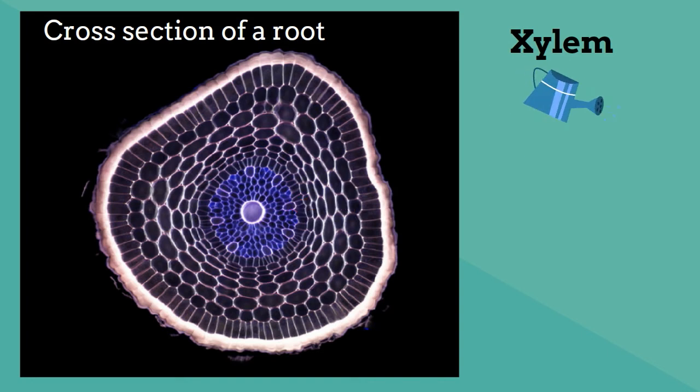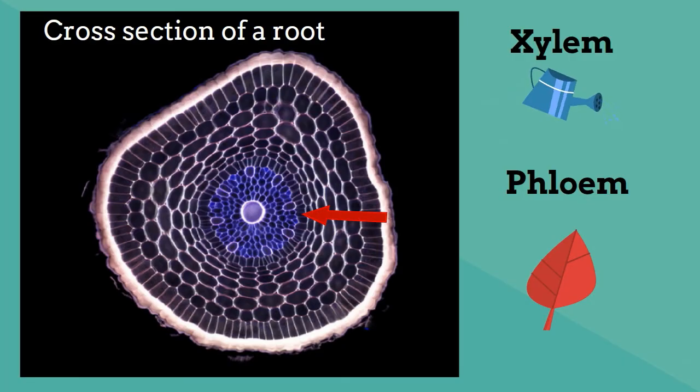On the other hand, phloem tissue transports food manufactured in the leaves to the root. The root tissues may then use the food for growth or store it for future use for the plant.